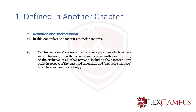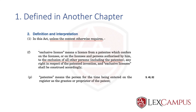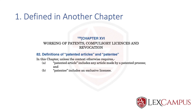Similarly, 'patentee' means a person for the time being entered on the register as the grantee or proprietor of the patent — it does not say the patentee includes an exclusive licensee. Section 2(1)(f) excludes the patentee from the exclusive licensee, and section 2(1)(p) defines patentee as not including an exclusive licensee.